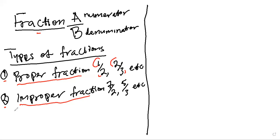In the other case, we have improper fraction. A fraction is said to be improper when the numerator is bigger than the denominator. So in this case, as we can see, seven is bigger than two — that is improper. And in the other case, we can see five is bigger than three — it's improper.